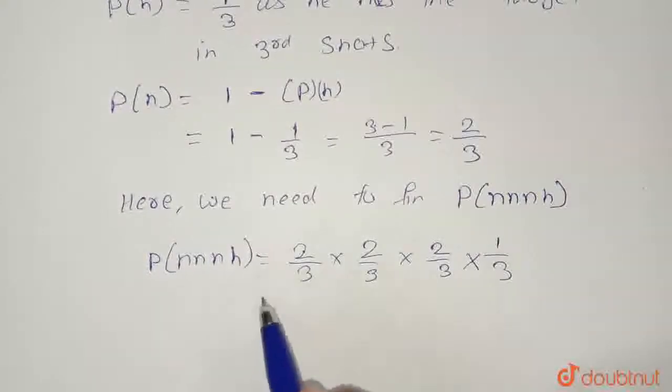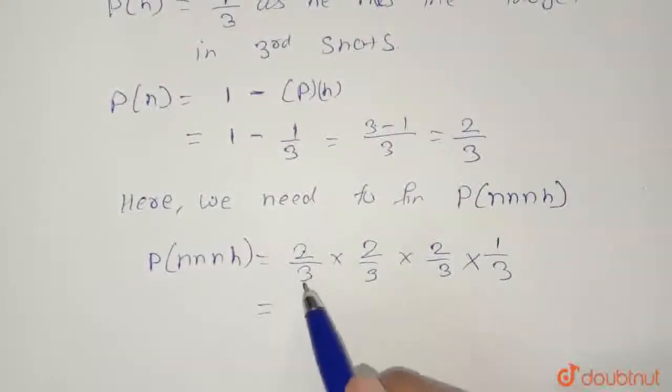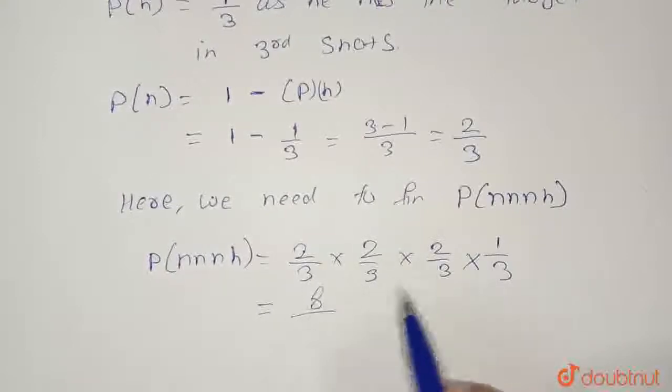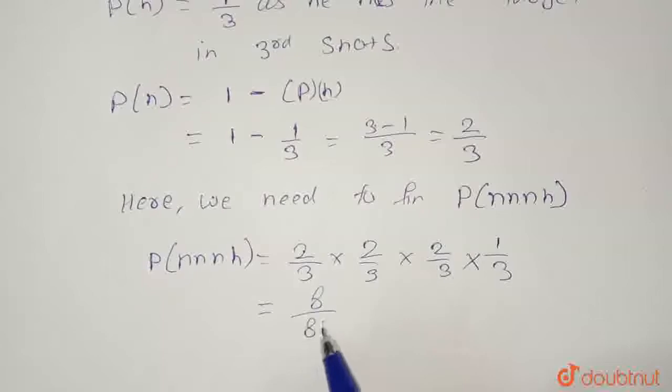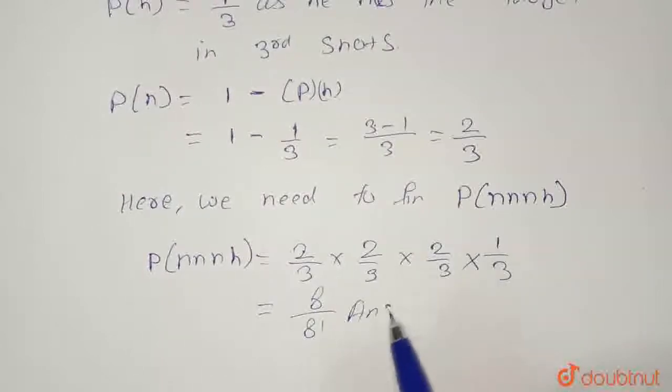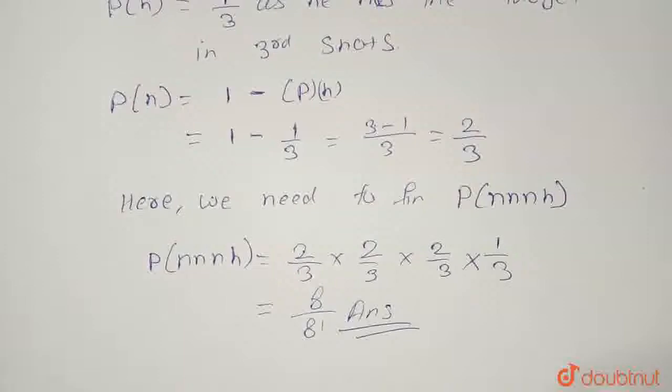When we multiply this, 8 upon 81. 8 upon 81 is the answer, the probability of an event that will not hit the target until fourth shot.